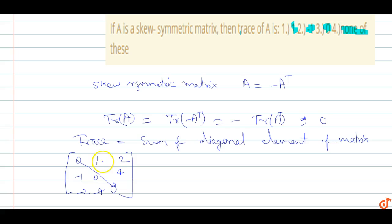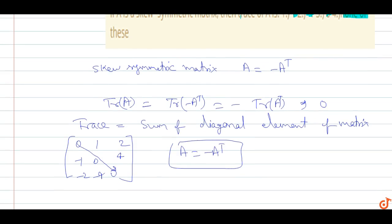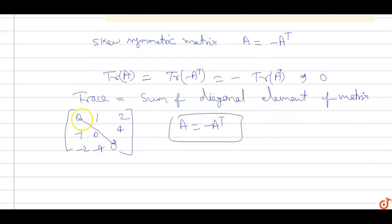A skew-symmetric matrix where A equals minus A transpose. In a skew-symmetric matrix, the trace is zero because the diagonal elements are zero. The trace is the sum of elements of the diagonals of the matrix.